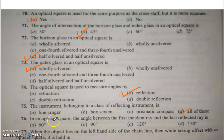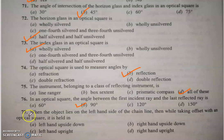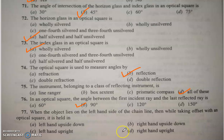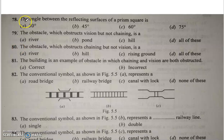Q76: In an optical square, the angle between the first incident ray and the last reflected ray is 90 degrees. When taking an offset with an optical square on the left-hand side of the chain line, it is held in the right hand upright. Q78: The angle between the reflecting surfaces of a prism square is 45 degrees.